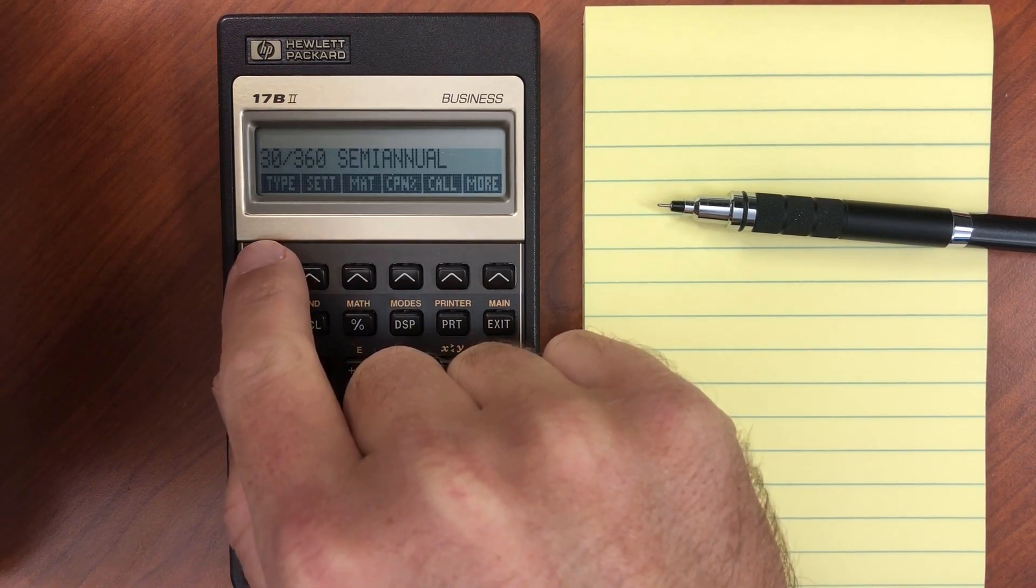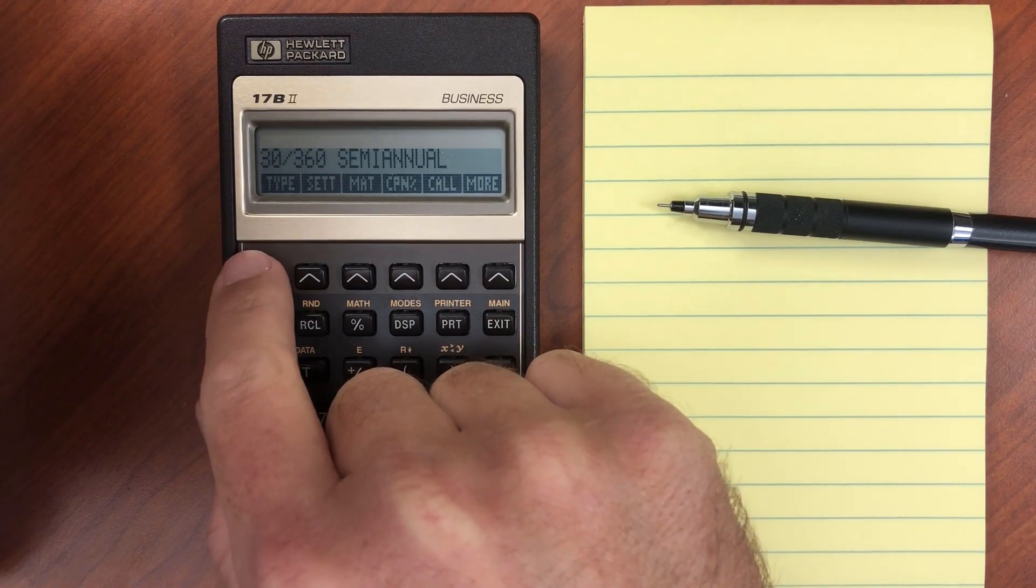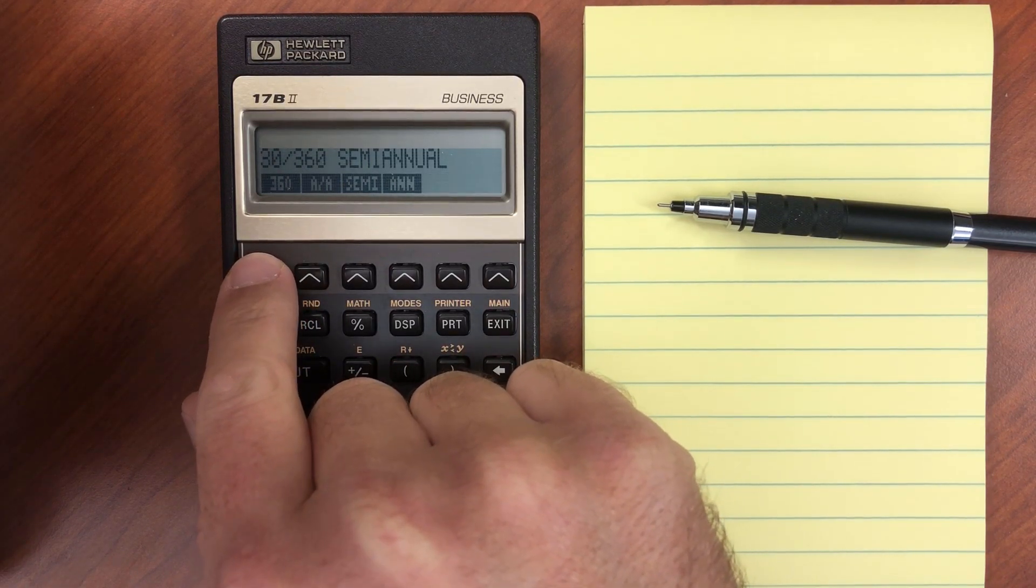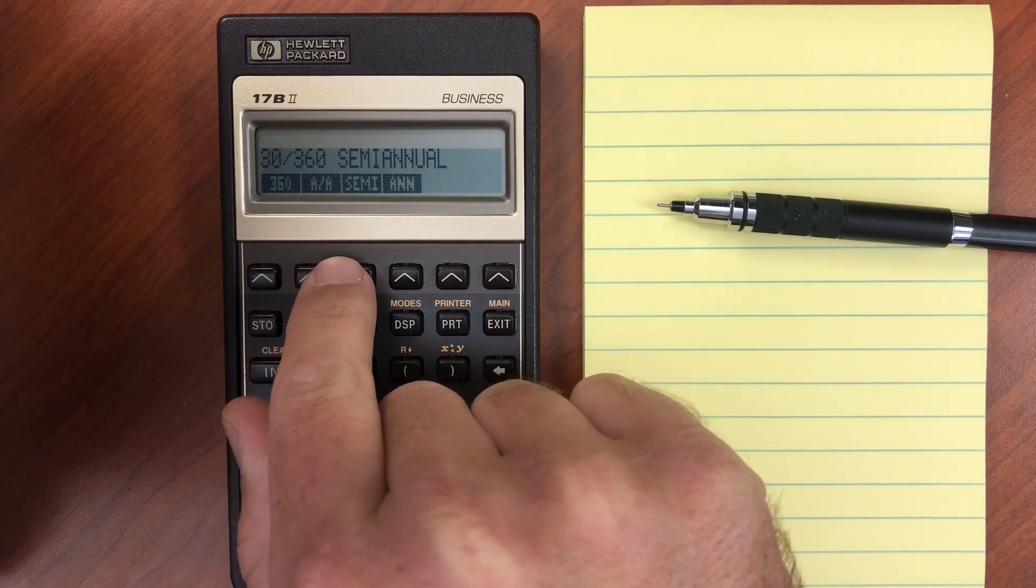You can set your bond type as 30/360 or actual/actual, and set the coupon payments as semi-annual or annual.